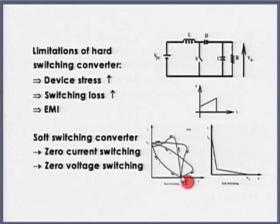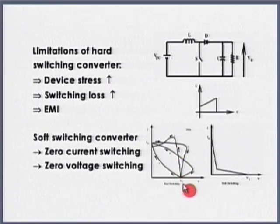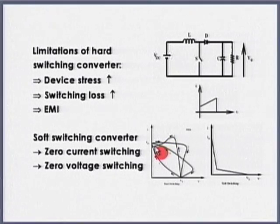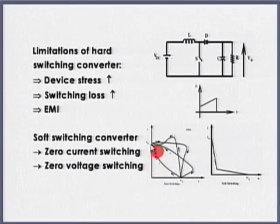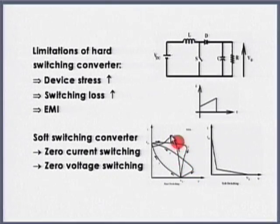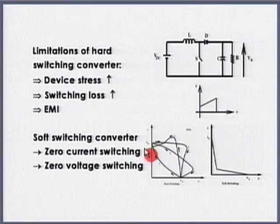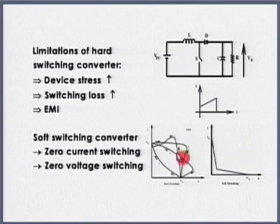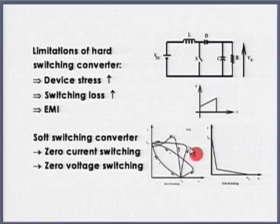When the device is turned on in hard switching, it takes a path like this. This additional increase in height could be because of the reverse recovery current it has to carry or various other issues. This could be the voltage drop across the parasitic inductance.